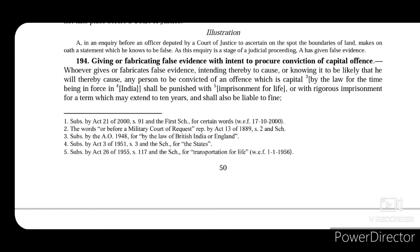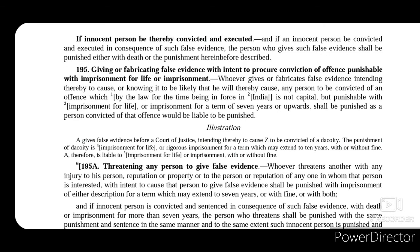Section 194 talks about giving or fabricating false evidence with intent to procure conviction of a capital offence. He is giving or fabricating false evidence with the intention that a person gets convicted of a capital offence. In that case, he shall be punished with imprisonment for life or with rigorous imprisonment for a term which may extend to 10 years and shall also be liable to fine. And if an innocent person is thereby convicted and executed, then this person shall be punished either with death or by the punishment described before.